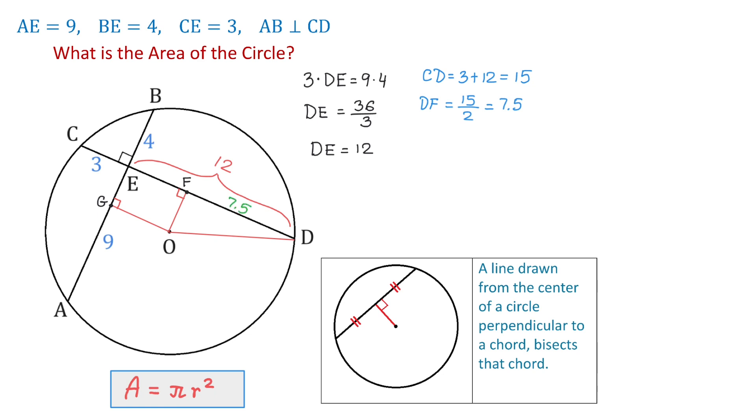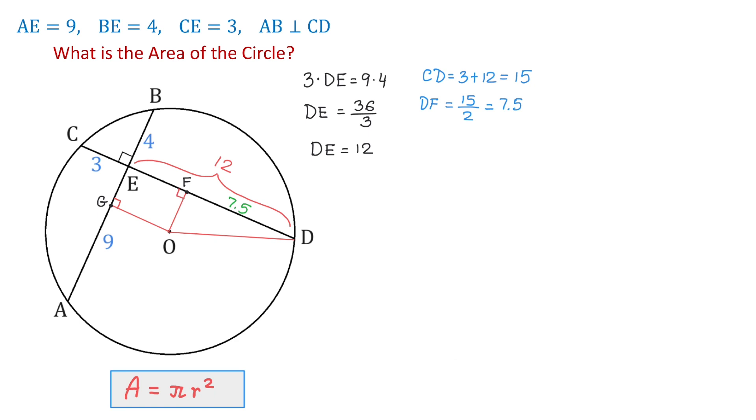Next, we will find OF. Because here we have a rectangle, OF is the same as GE. The line segment AB is 9 plus 4. AB equals 9 plus 4, which is 13.